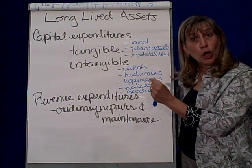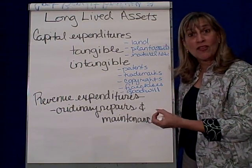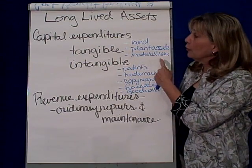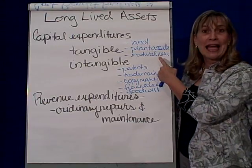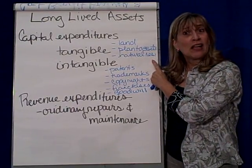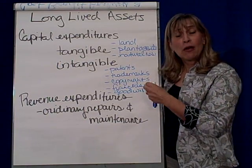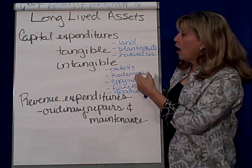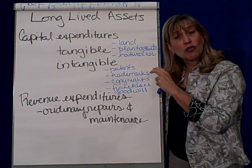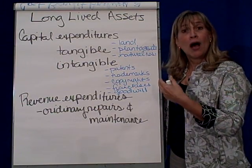Capital expenditures are long-lived assets — capital meaning we're investing in assets that we will use over a long period of time. There are tangible capital expenditures, and those include things like land. Plant assets include things like buildings, equipment, vehicles, and machinery. Plant assets are resources that you invest in and utilize to generate revenue for your business.